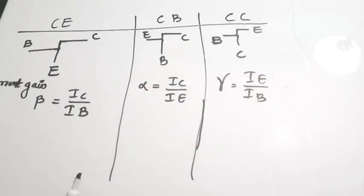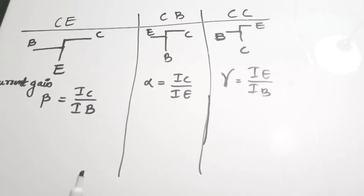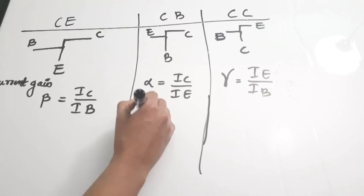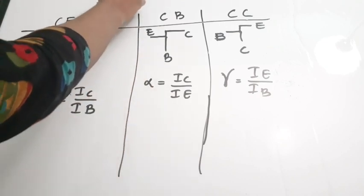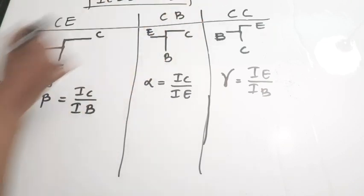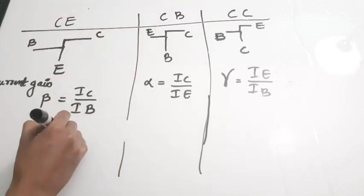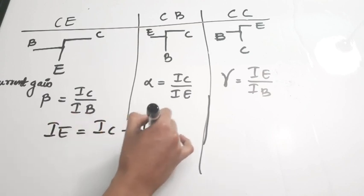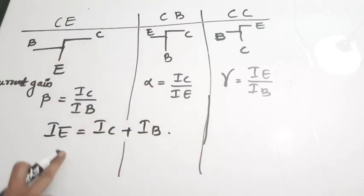Another very important equation is the relation between the currents. There is an emitter current, collector current, and base current. The relation is: IE is equal to IC plus IB. That is, total emitter current equals collector current plus base current.